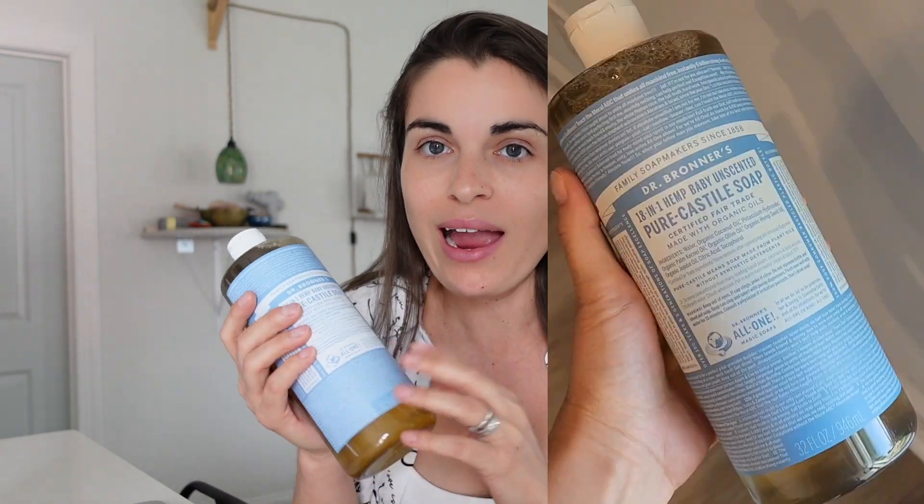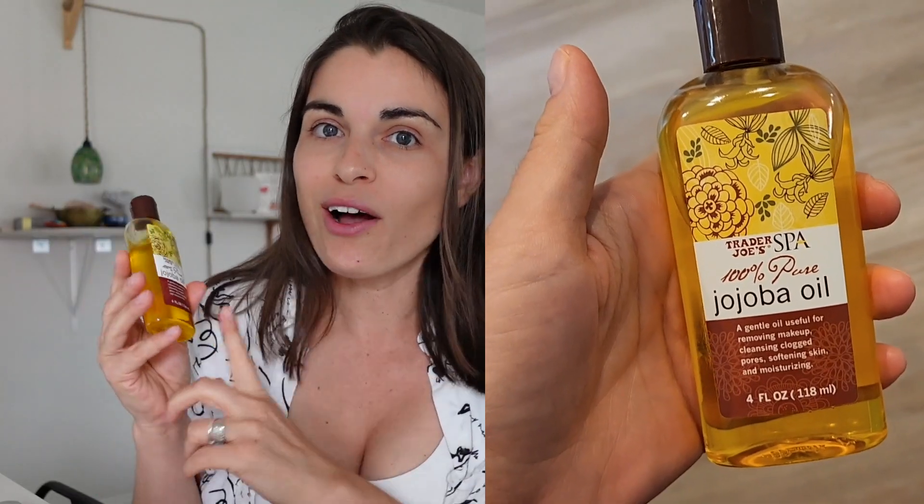So let's start with the facial cleanser. Ingredient number one is Castile soap, and I use Dr. Bronner's The Baby Kind. It cleans really well. I like the Dr. Bronner's brand and everything they stand behind, but of course you can use any Castile soap. Number two ingredient is vegetable glycerin. This will help you retain the moisture in your face. And the third ingredient is jojoba oil. It's a natural moisturizer that helps balance the oils in your skin. It does not give you that oily feeling. This will not clog your pores.